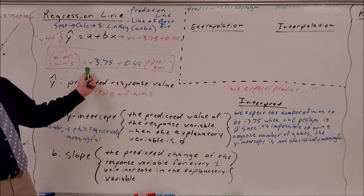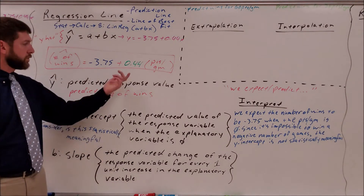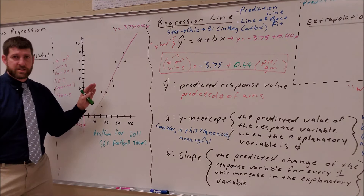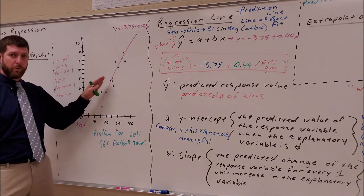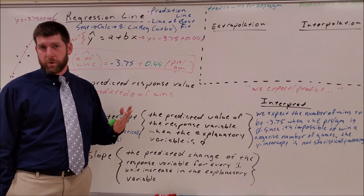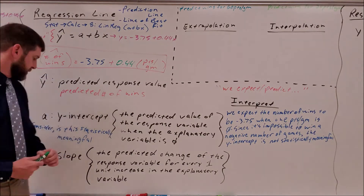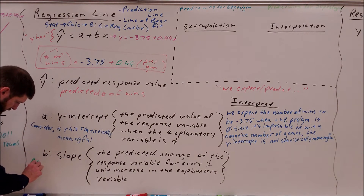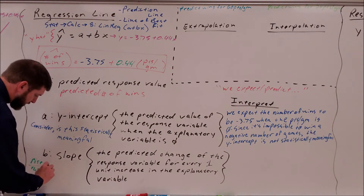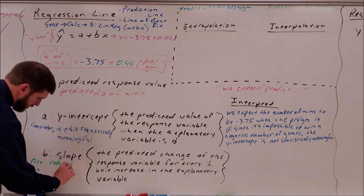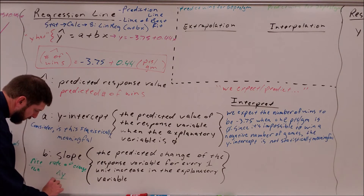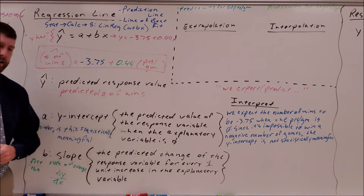Now let's talk about the slope. Slope is how the graph climbs — how do you get from one point to the next. People typically say rise over run, or rate of change, or delta Y over delta X. In linear regression, the slope represents the predicted change of the response variable for every one unit increase in the explanatory variable.